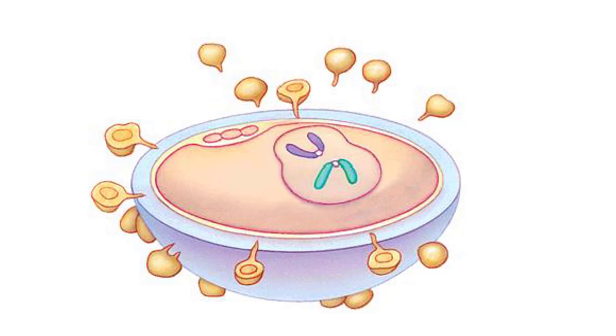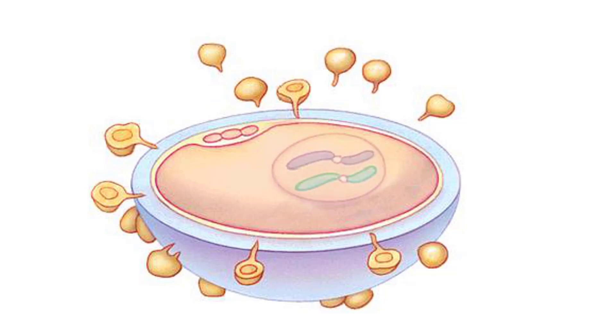The sperm nucleus and egg nucleus fuse. At fusion, fertilization is over. The diploid zygote has formed and development will begin.